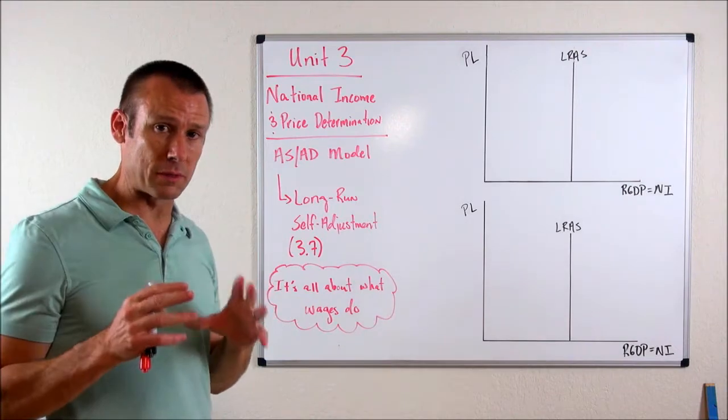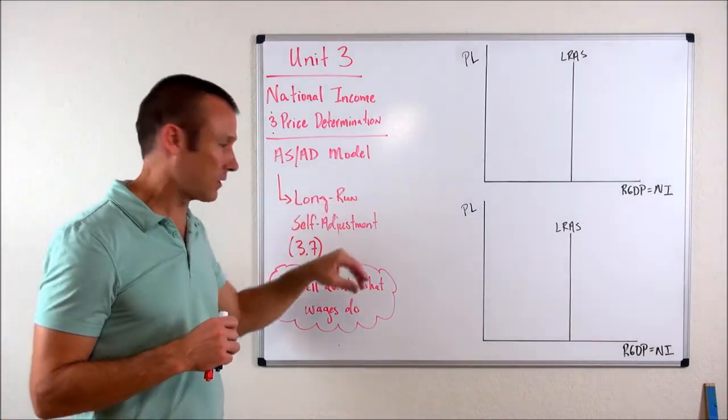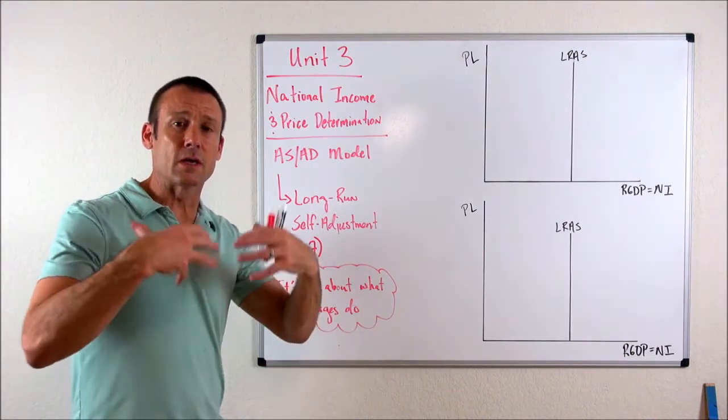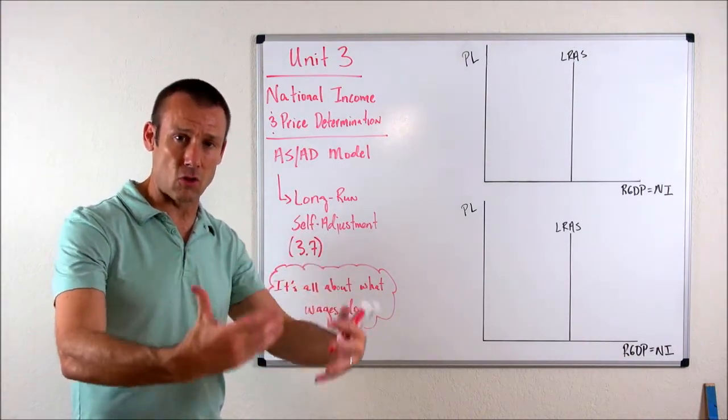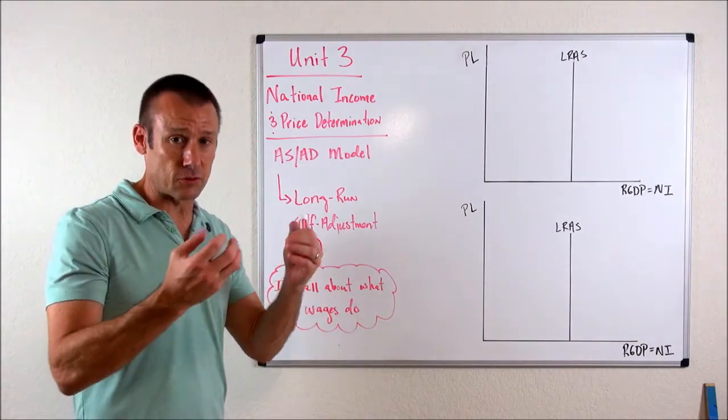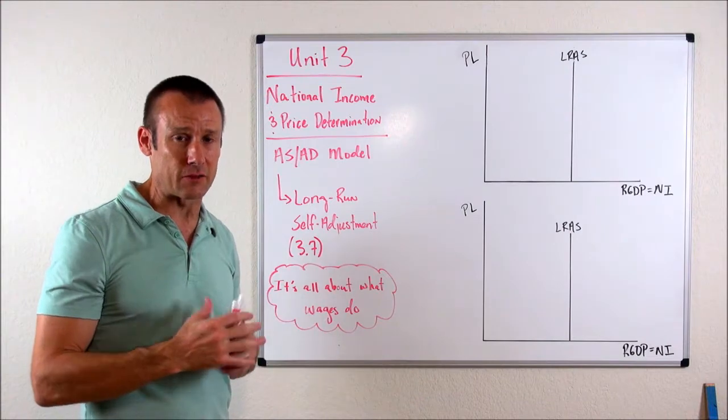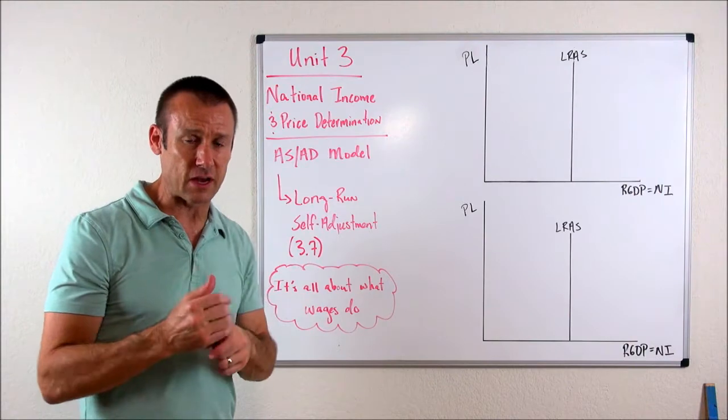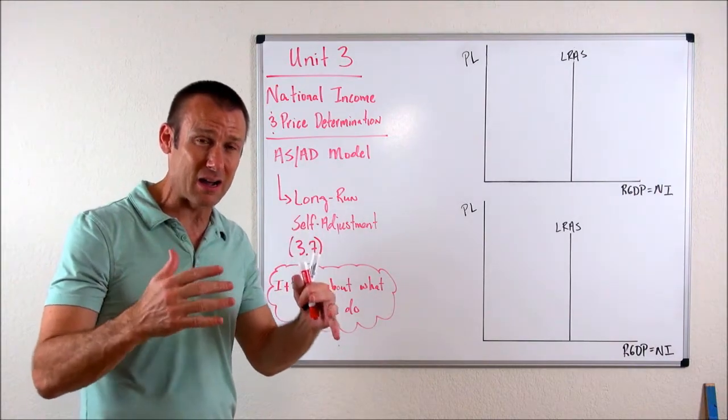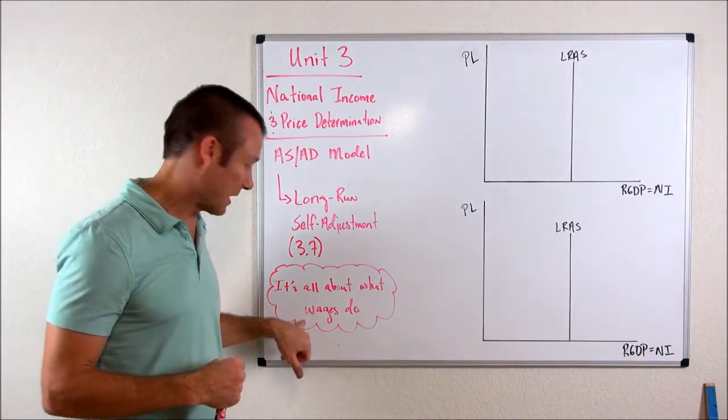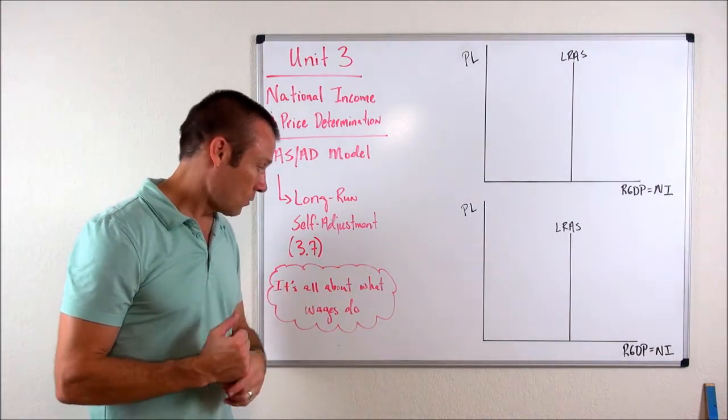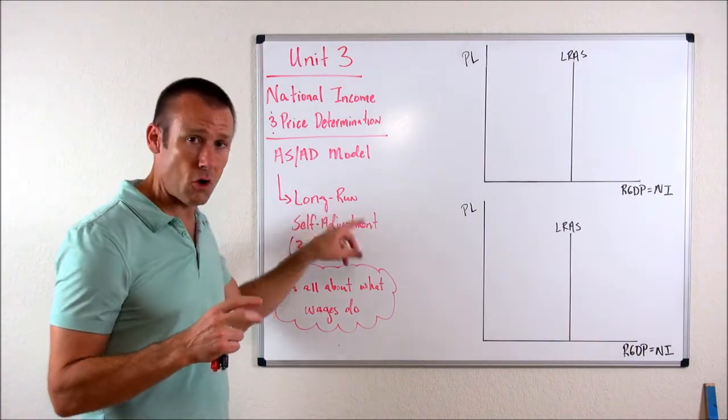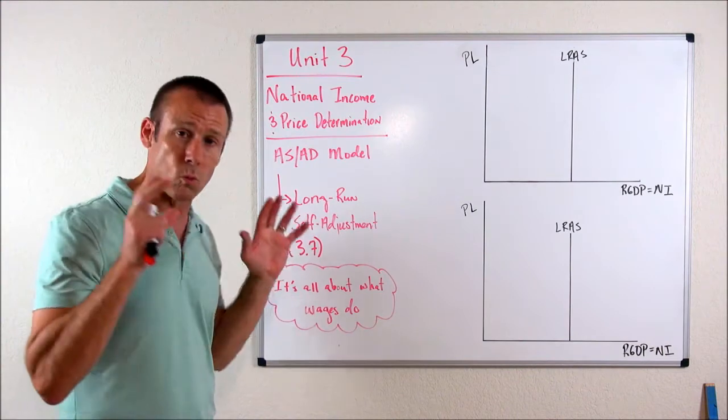In this particular video, we're going to be looking at the ASAD model and the long-run self-adjustment, how the economy, if we leave it alone, can self-adjust in the long run. What we mean by self-adjust is correct its way back to the LRAS, to our full employment level of output. I'm going to cut to the chase. What is the main thing we need to keep our eye on for how that takes place? It's all about what wages do.